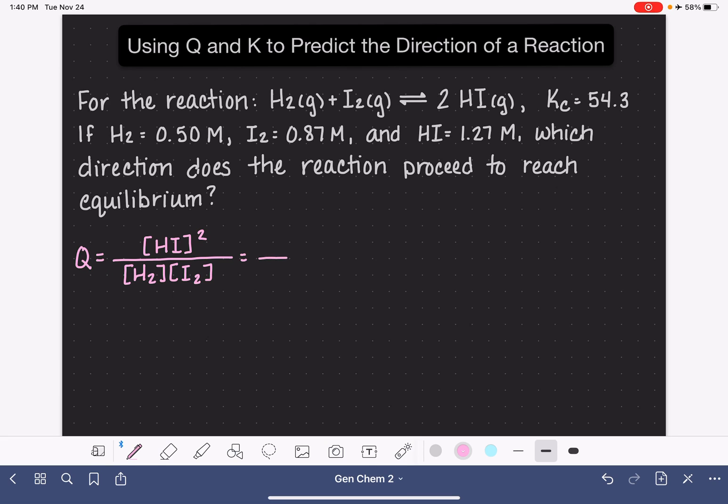So for the concentration of HI, the problem tells us that that value is 1.27. Do not forget that we need to square it, because the stoichiometric coefficient is 2. And then the concentration of H2, the problem tells us, is 0.50.